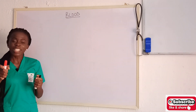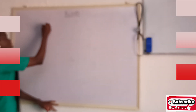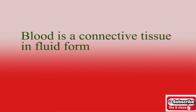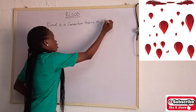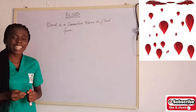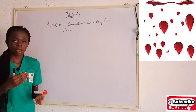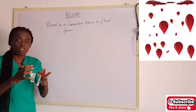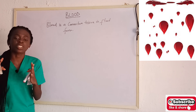So what is blood? Can you drop your answer in the comment section? Blood is a connective tissue in fluid form. When we say tissue, what do we mean? Blood is simply a combination of similar cells — similar cells coming together to form blood, which makes it a tissue.